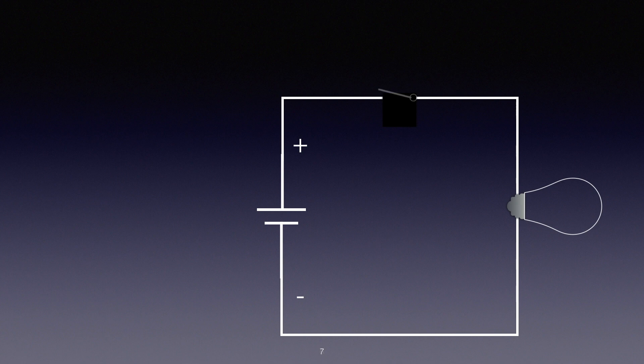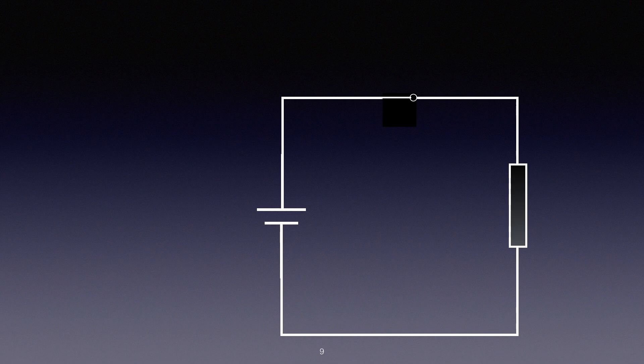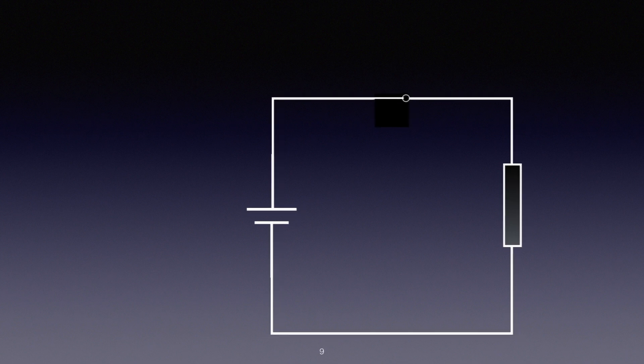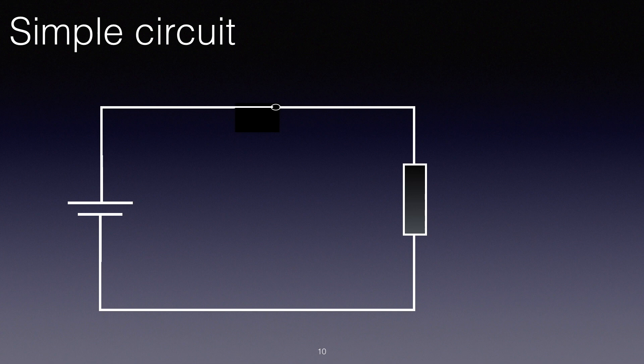We can replace the switch there with a switch symbol. The lamp we'll replace with a resistor. We haven't replaced it with a lamp because we're not particularly interested in the light emitting qualities of the incandescent lamp. We just want to have some resistance in the circuit. This forms what we can call the simple circuit.